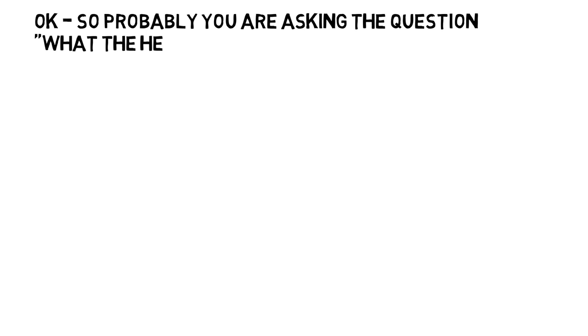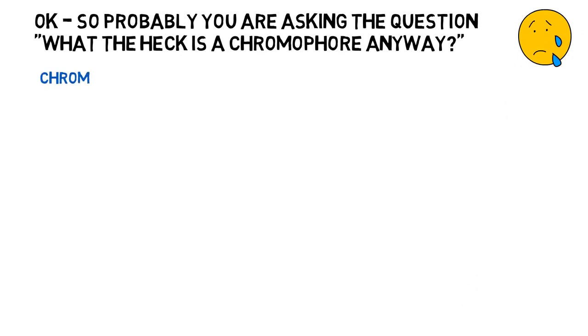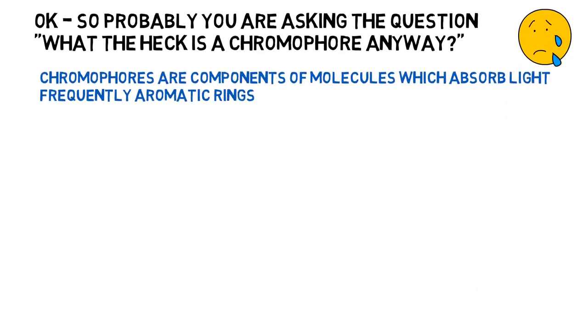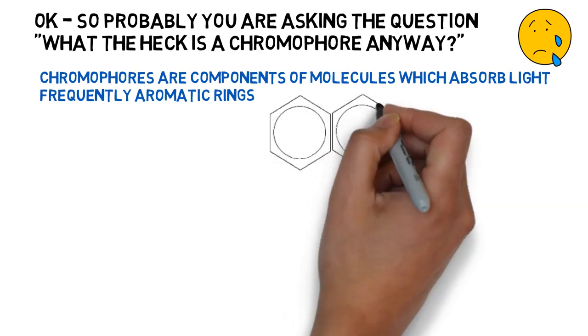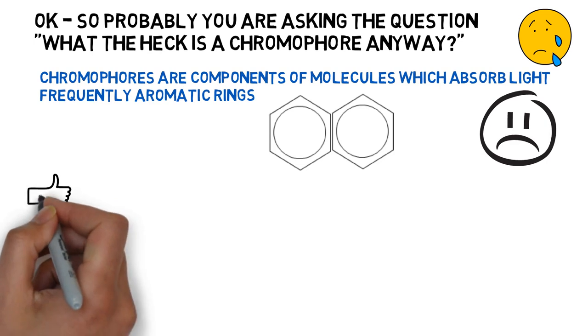Okay, so what the heck is a chromophore anyway? It's a good question. Chromophores are components of molecules which absorb light, and these are often aromatic rings like this. And this opens up the opportunity for us to consider a few rules of thumb, which we should remember about chromophores.